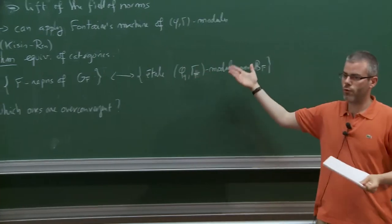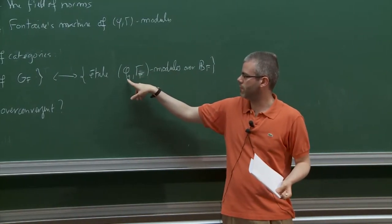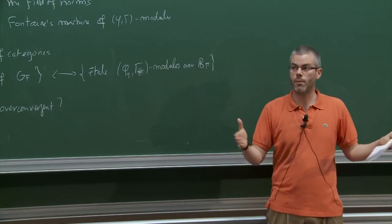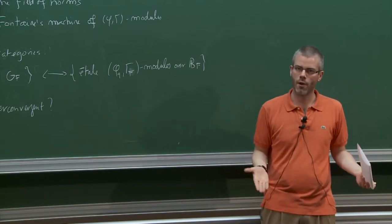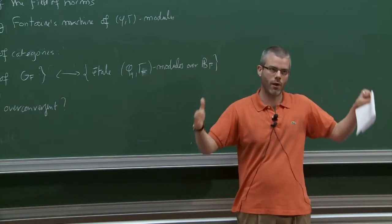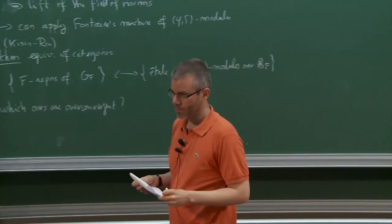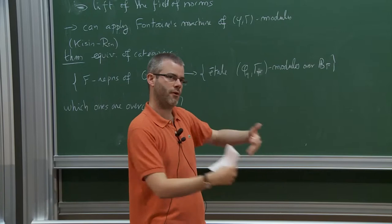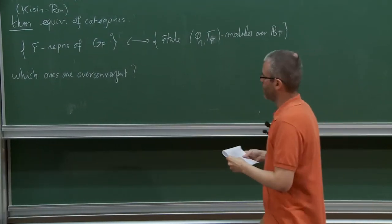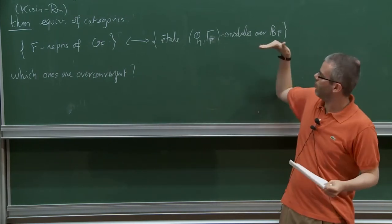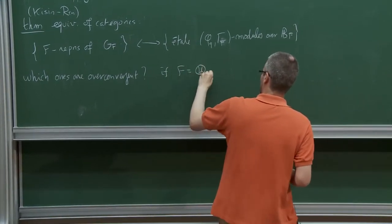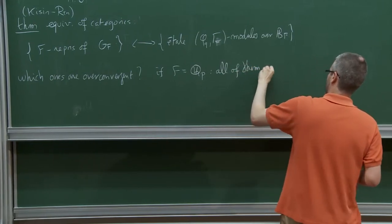These phi-gamma modules, if you choose a basis, have matrices of φ and elements of Γ with entries in B_F. The elements of B_F are power series that a priori converge nowhere. Overconvergent means you can choose a basis such that the entries of these matrices are power series that do have a non-empty domain of convergence. The point is that then you can evaluate those power series, allowing you to relate phi-gamma modules and p-adic Hodge theory. The good news in the cyclotomic case is that if F = Q_p, all phi-gamma modules are overconvergent — a theorem of Cherbonnier and Colmez.